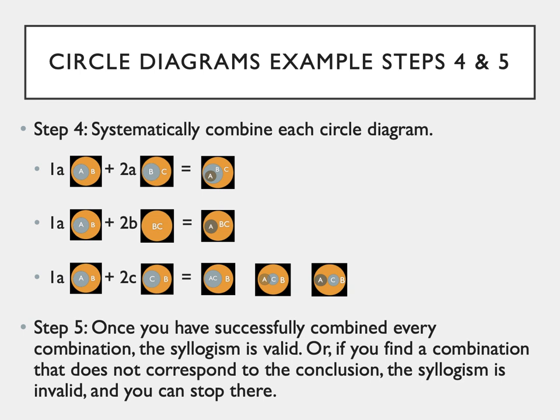Next, 1A plus 2B: 1A is the same, and 2B — the second option for premise two — is big BC. When combined, little A is inside B,C. We know B and BC are the same because they are completely overlapping, so little A goes inside big BC. This also aligns with the conclusion because again, we have little A inside big C, which is one of our options.